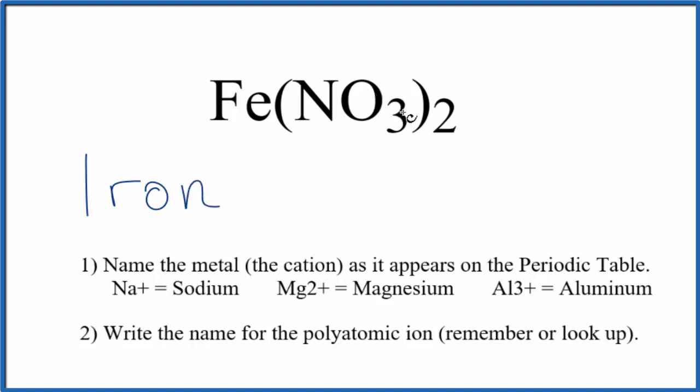And then we write the name for the polyatomic ion, the nitrate ion. That's one you should memorize. Lowercase n. So at this point we have the name iron nitrate for Fe(NO3)2.